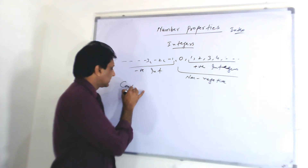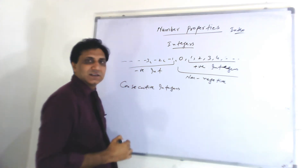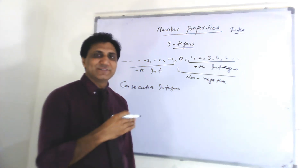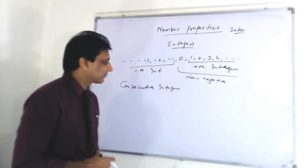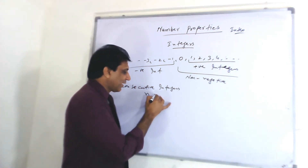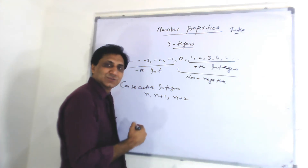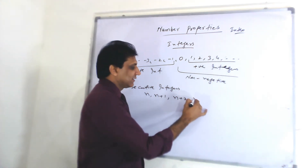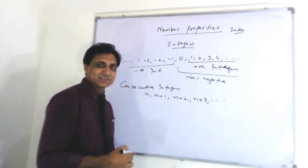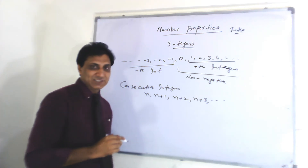Consecutive integers — consecutive means in sequence, like one, two, three, four, five or eleven, twelve, thirteen, fourteen or fifty, fifty-one, fifty-two. These are consecutive integers. So if the first number is n, the second will be n plus one, the third will be n plus two, then n plus three, n plus four, and so on. This sequence is used when the question asks for consecutive integers.